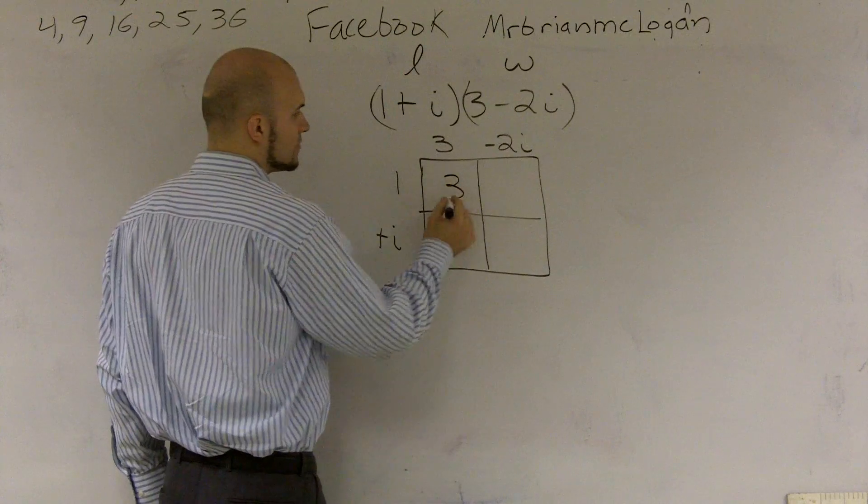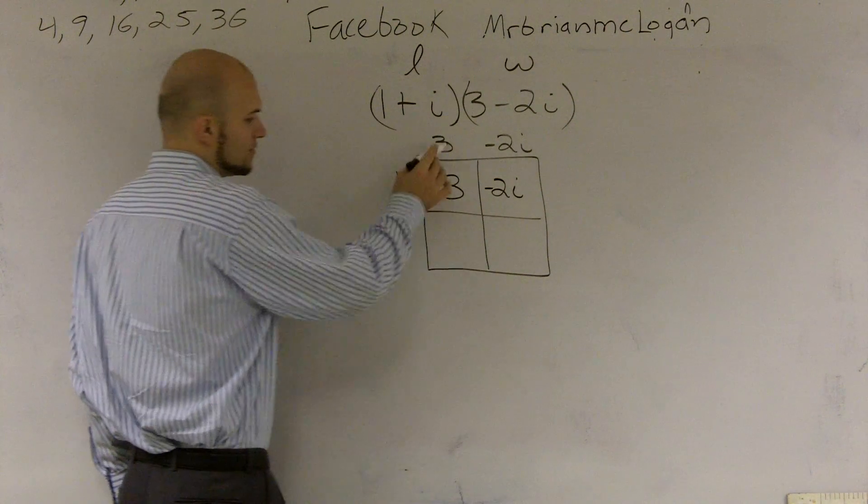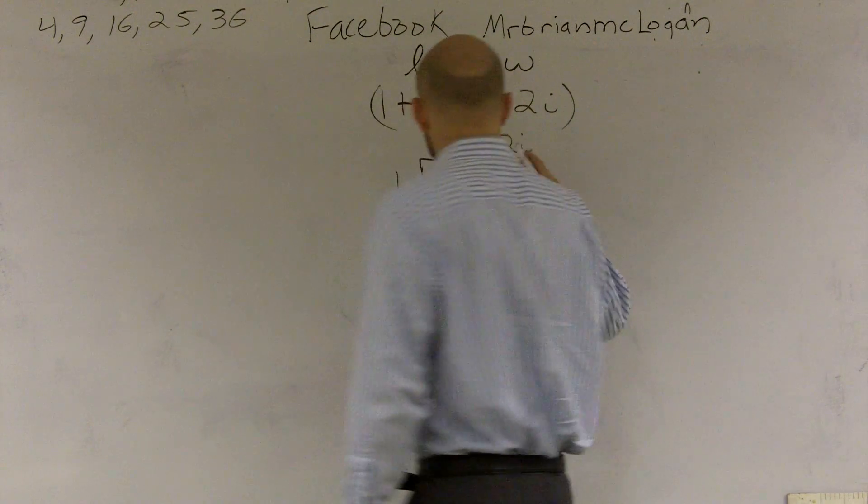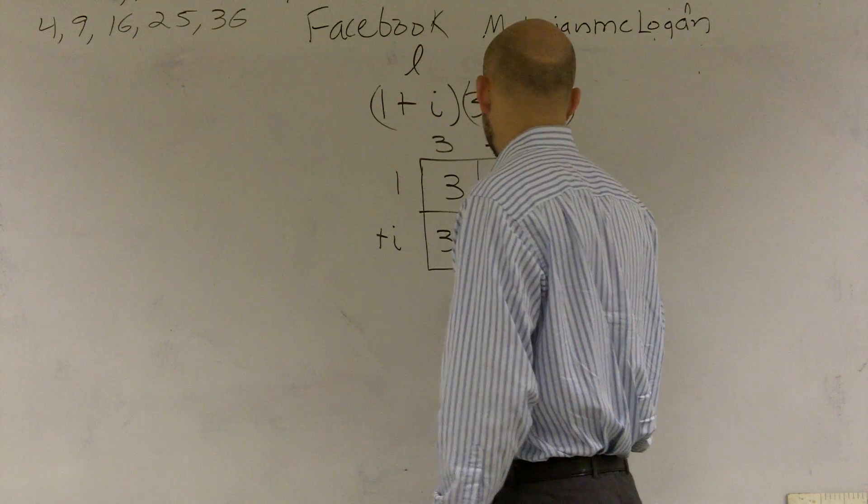3 times 1 is 3. 1 times negative 2i is negative 2i. 3 times i is 3i. And negative 2i times i is going to be negative 2i squared.